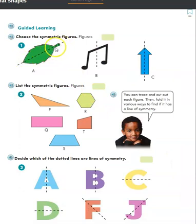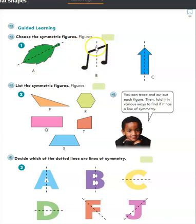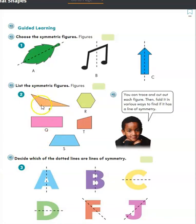This leaf — if we cut it in half right there and fold it over, those two pieces would match exactly. So this is a symmetric figure and that is its line of symmetry. That musical note, however — if we were to put the line here and fold it over, those two pieces would not match exactly, so that is not a symmetric figure. Shape C, this blue arrow — if we put the dotted line right down the middle and fold it over, we would have a symmetric figure because the two pieces would fit exactly.